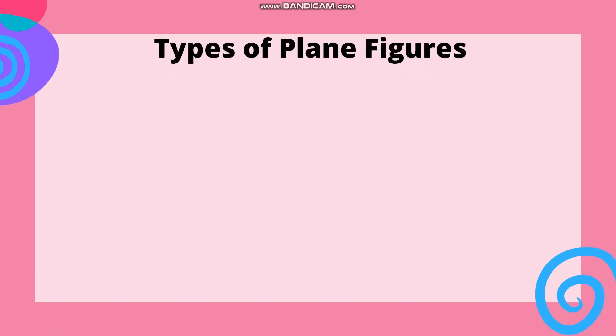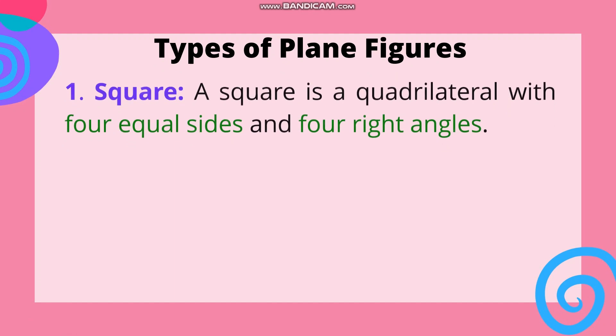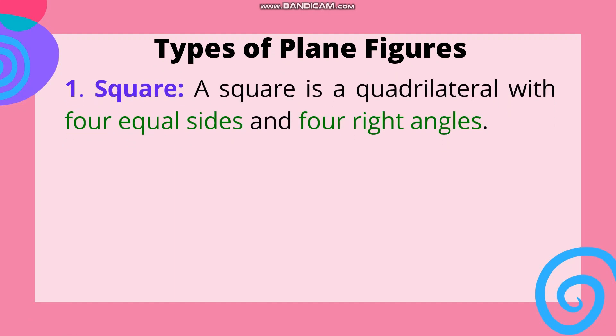Types of plane figures. Number 1: Square. A square is a quadrilateral with four equal sides and four right angles. Based na nakikita natin, ang square ay may apat na equal sides at may four right angles or katumbas ng 90 degrees ang sukat ng bawat angle.